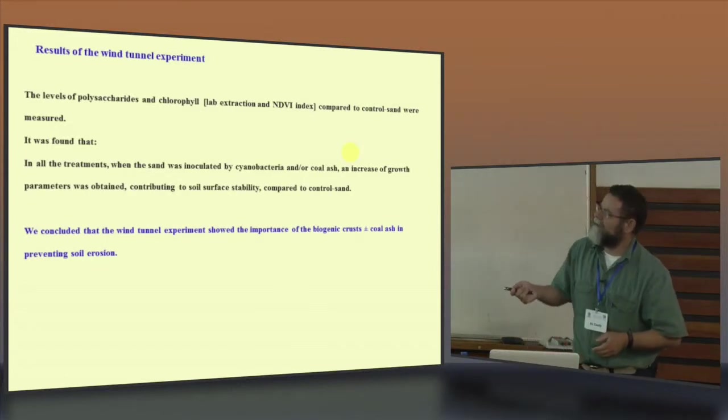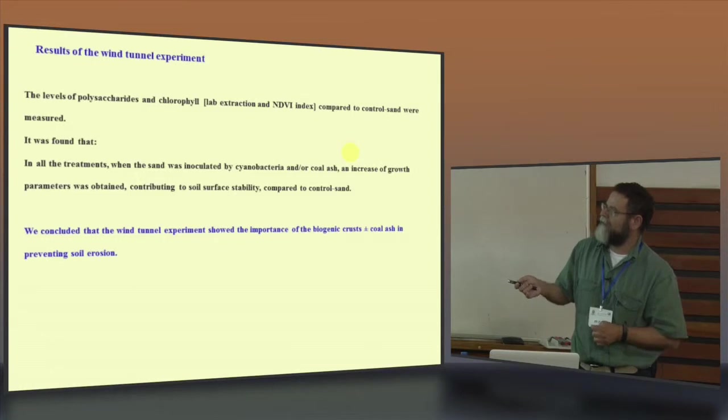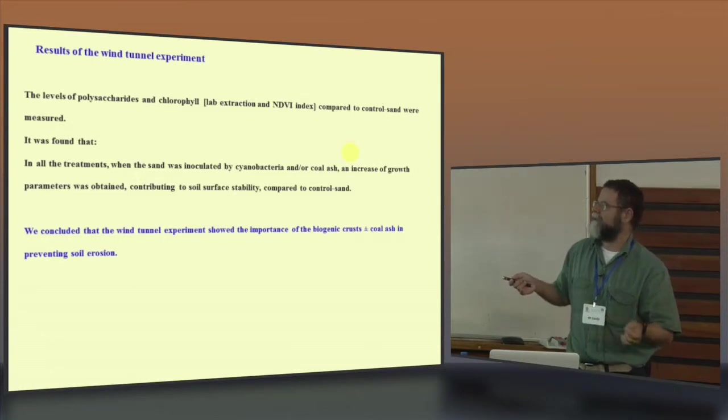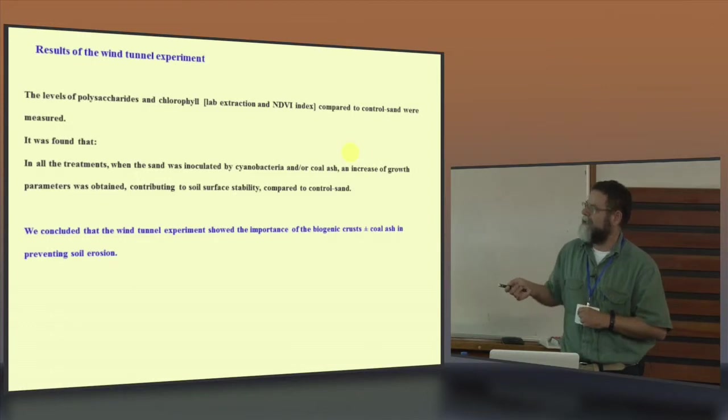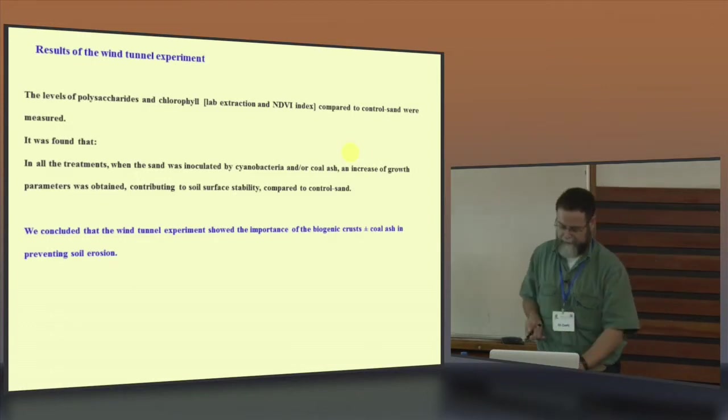We can summarize and conclude that the wind tunnel experiment showed the importance of the biogenic crust plus minus coal ash in preventing the soil erosion.